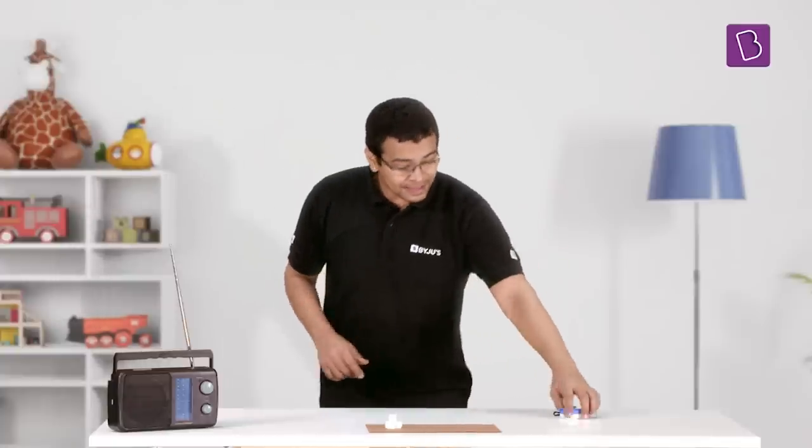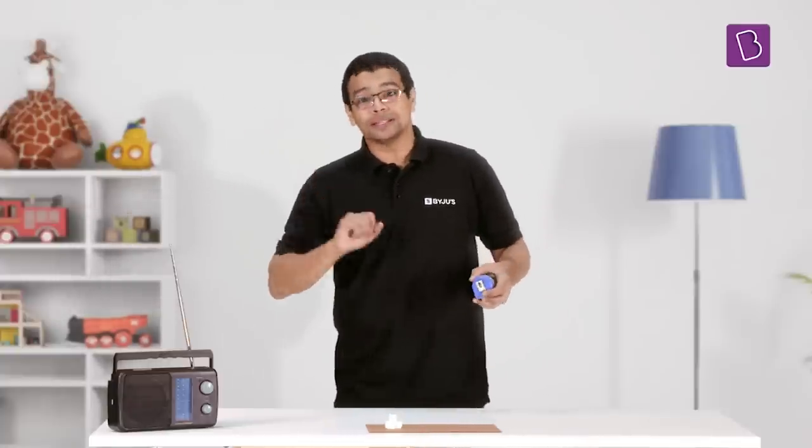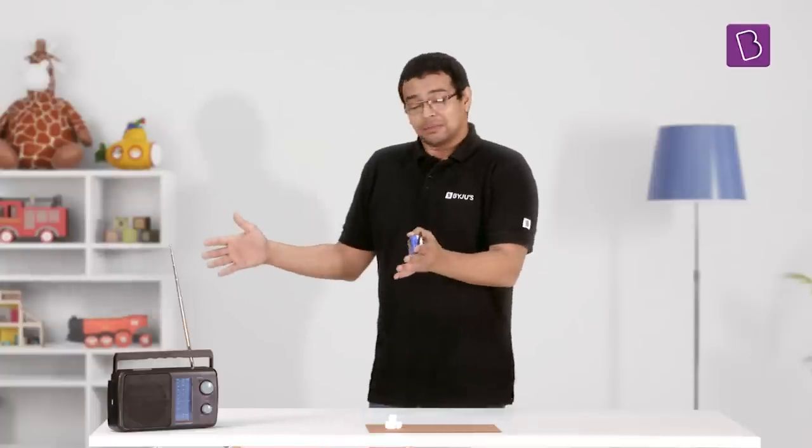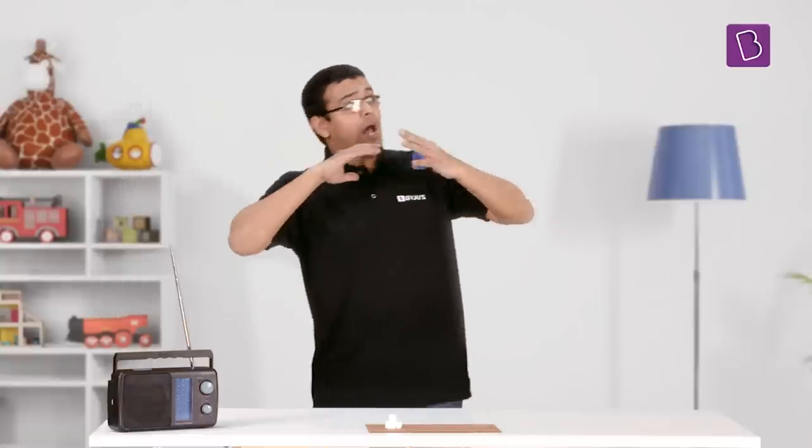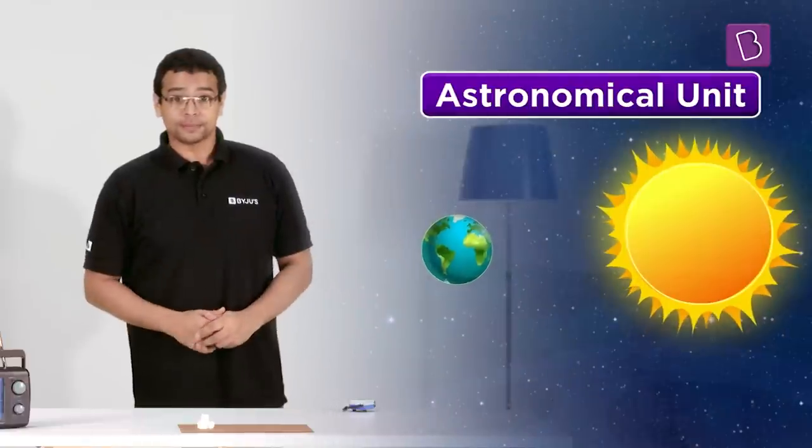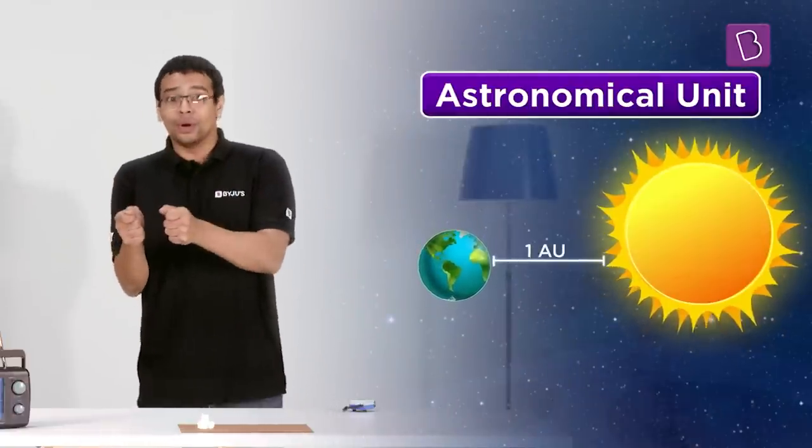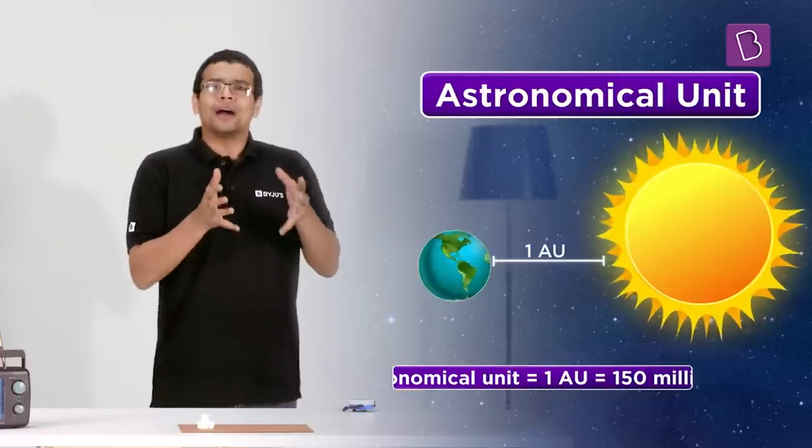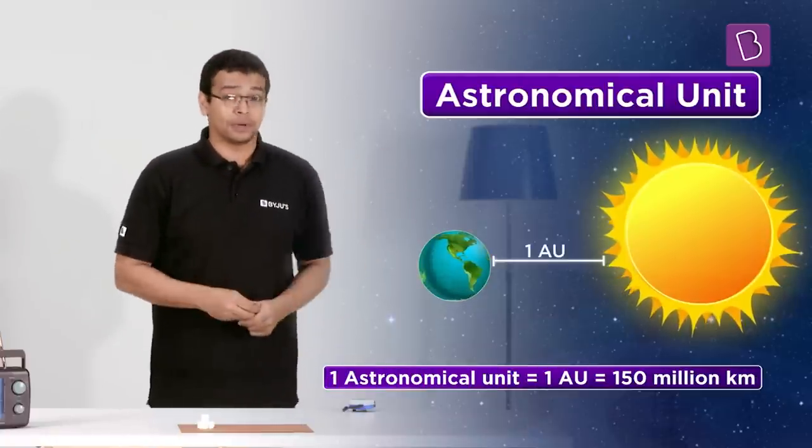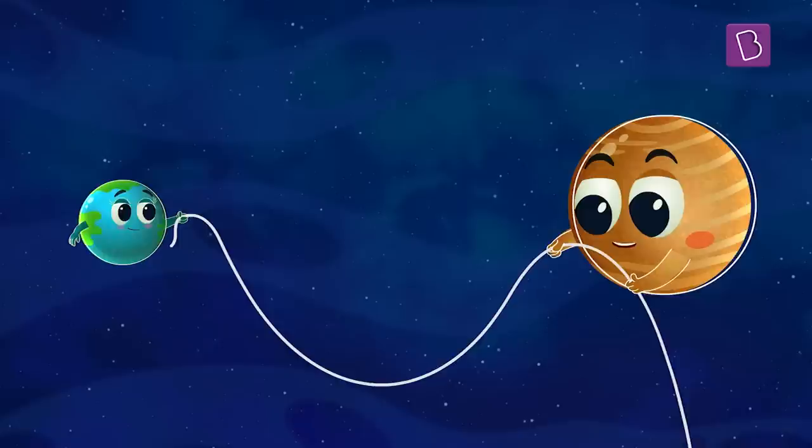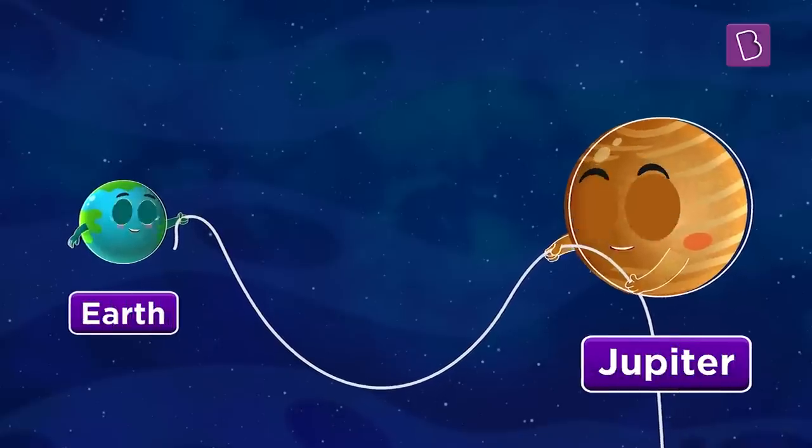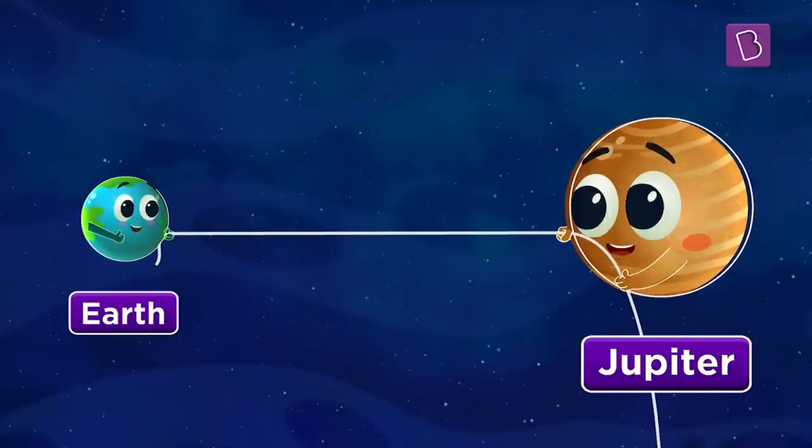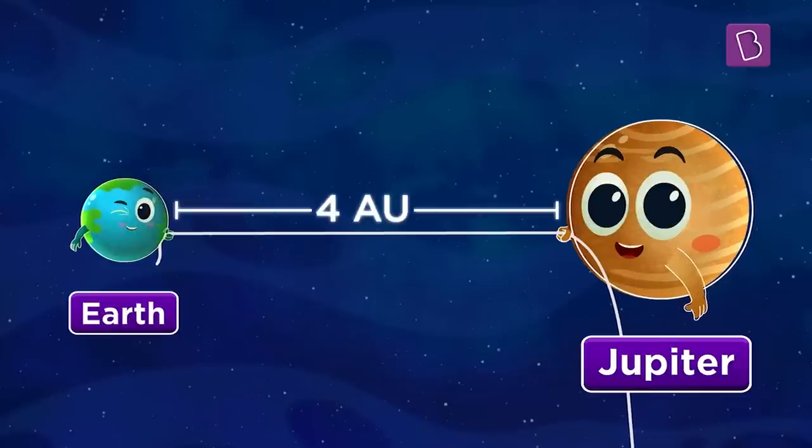It's quite a number, but don't you worry. Just like we have centimeter to measure small distances, meter for regular, kilometer for long distances, for such long distances we have something called the astronomical unit. One astronomical unit or AU is approximately the distance between Earth and Sun, which is about 150 million kilometers or 15 crore kilometers. So we can say that the distance between Earth and Jupiter was measured to be about four astronomical units.